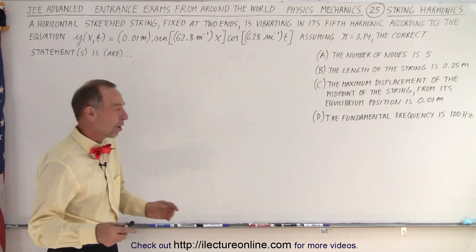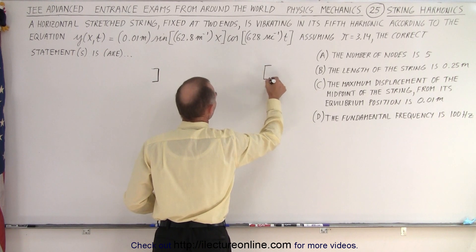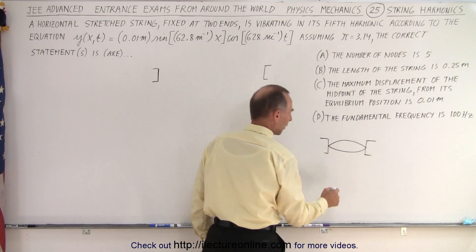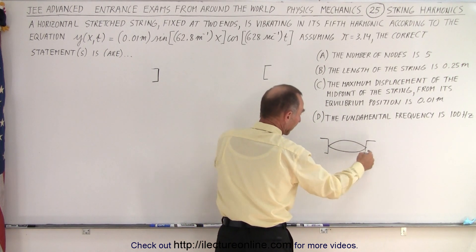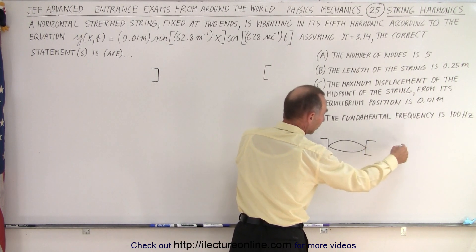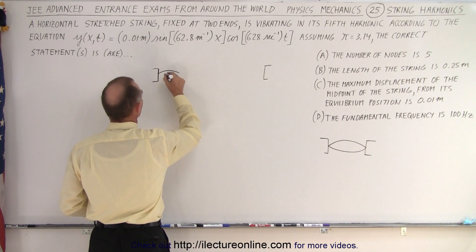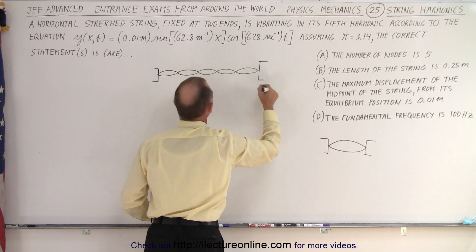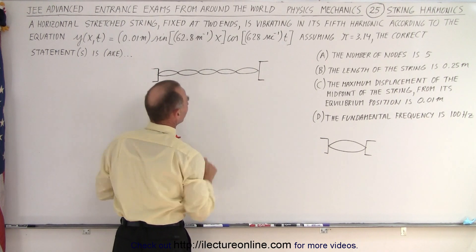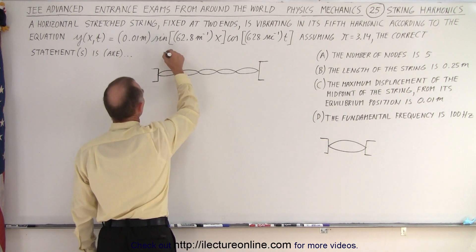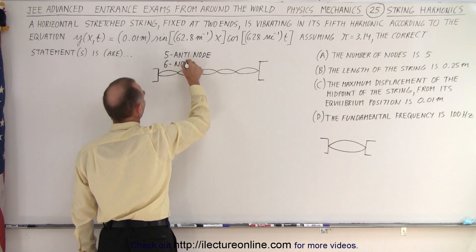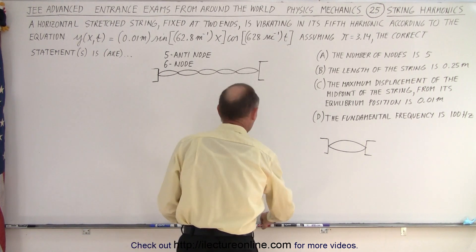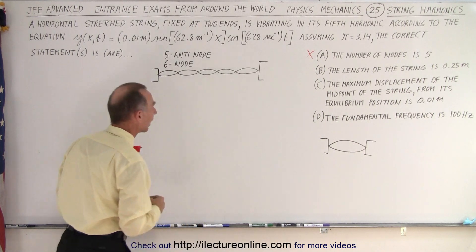Let's make a drawing first. We have two anchors and a stretched string. The fifth harmonic: the first harmonic has one antinode and two nodes, and we add a half wavelength each time. So the fifth harmonic has five antinodes and six nodes. One answer states the number of nodes is five — that is not correct, there are six nodes.